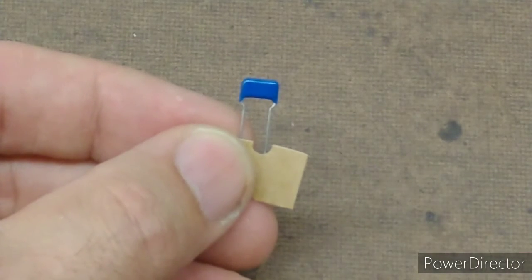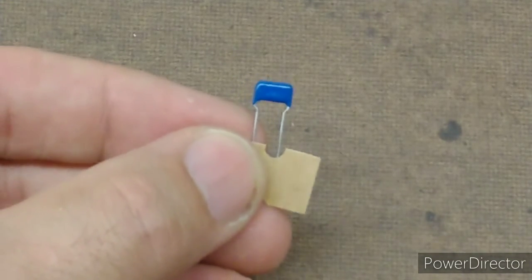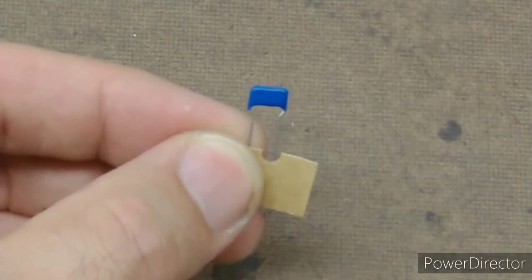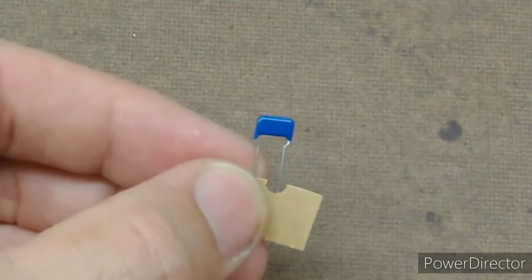The next component we're going to solder onto our board is a capacitor. As we've learned, a capacitor is a temporary battery. So this is going to end up holding a charge and then releasing a charge very rapidly.